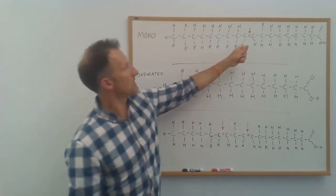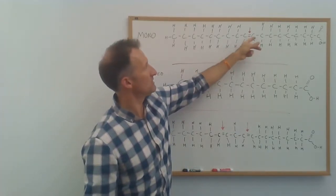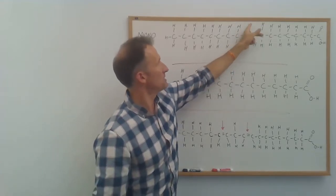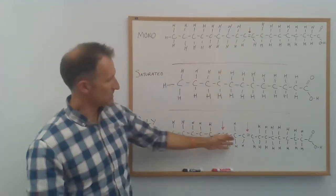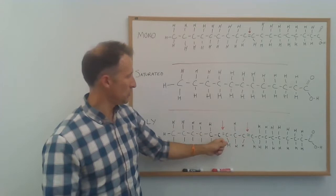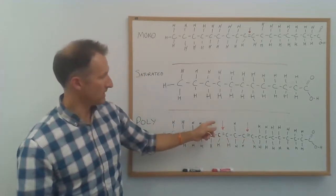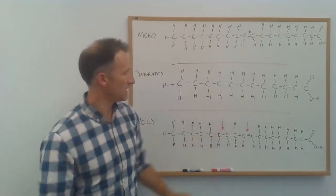A monounsaturated fat is where there's one double bond between successive carbon atoms, leaving some open space there. A polyunsaturated fatty acid is one where there's two or more double bonds, again leaving space where there are not any hydrogens.